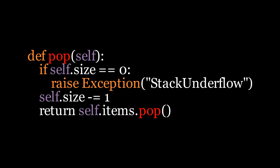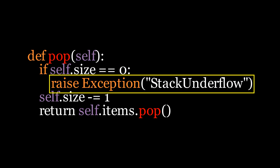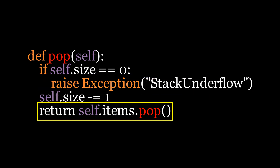To define the pop operation, we'll create a method called pop. First, it checks if the stack is empty by verifying if the current size is 0. If the stack is empty, it will raise a stack underflow error. Otherwise, it will decrease the size by 1 and remove and return the last item from the items array.